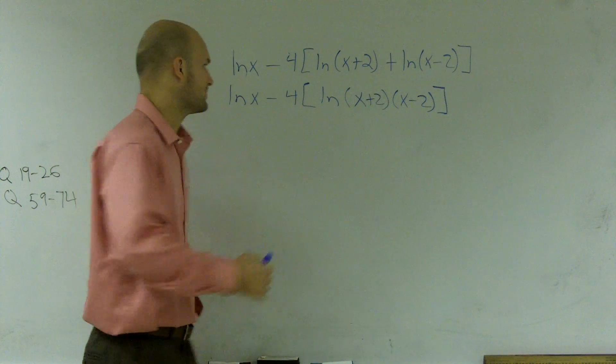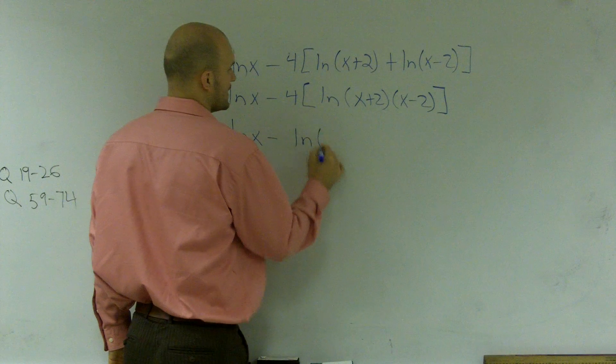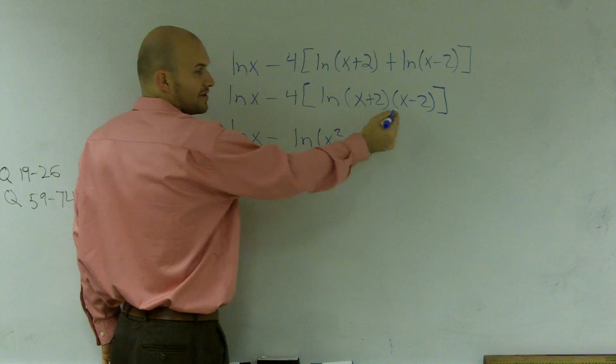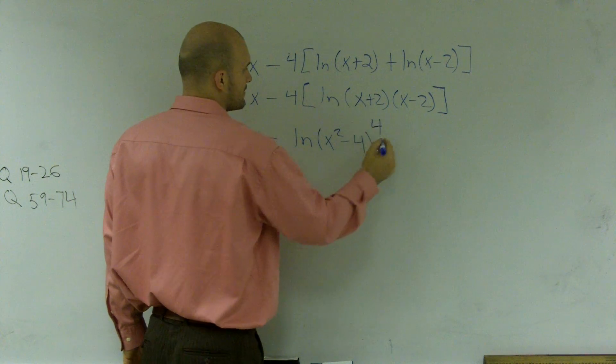Then I have to use my exponents. So I take my exponent and I'm going to put it back up here. So ln of x minus ln of x squared minus 4. I just multiplied these together. It's a difference of two squares, so I did it in my head. And then I bring my 4 up there.